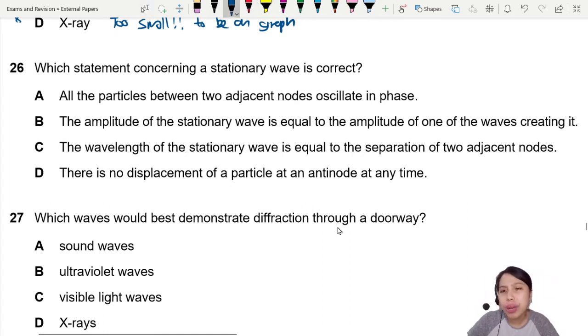All particles between two adjacent nodes oscillate in phase. So in a stationary wave, you got loops. They look like that. Why do we use dotted lines? Because the particles will move up and down, up and down, up and down.